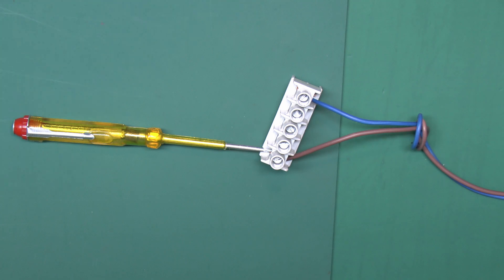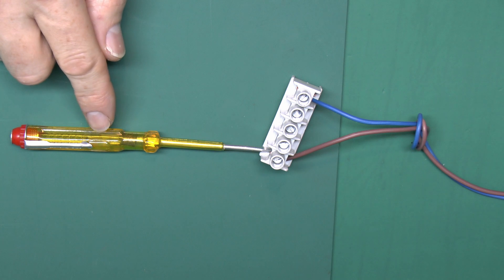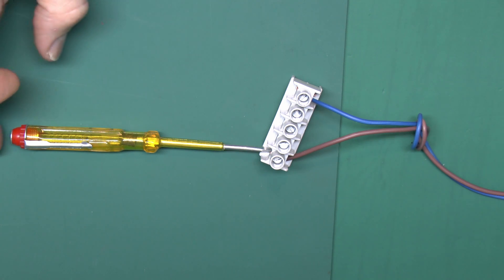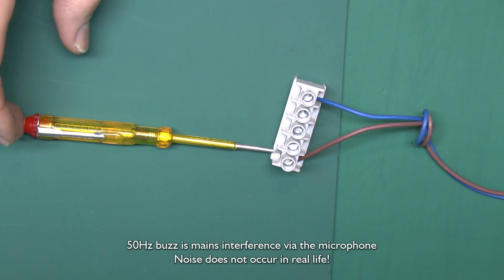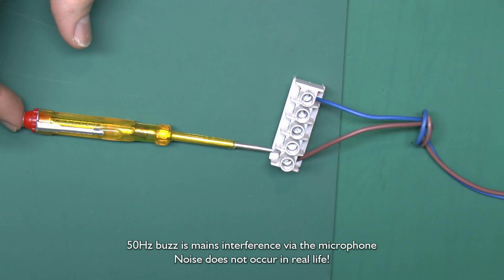Now this is how these things are supposed to be used. You're supposed to put the end into a live terminal, and then you're supposed to touch this end, and then the little neon in the center there is supposed to glow. Does it? Well, sort of.